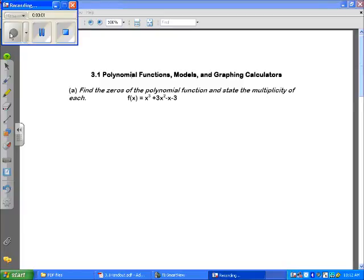I'm going to work on this worksheet 3.1, part A. It says, find the zeros of the polynomial function and state the multiplicity of each. Okay, so the first thing we have to do is decide how do we find the zeros. The way we find the zeros is we set f of x equal to 0, so let's start with that.